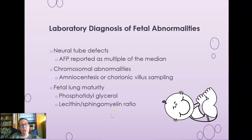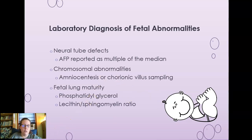For lab diagnosis of fetal abnormalities: neural tube defects use AFP reported as a multiple of the median; chromosomal abnormalities use amniocentesis or chorionic villus sampling; fetal lung maturity uses phosphatidylglycerol and lecithin-to-sphingomyelin ratio on amniotic fluid. The quad screen and triple screen are done in the second trimester of pregnancy. That concludes the lecture on pregnancy and reproductive diseases.